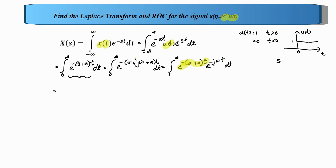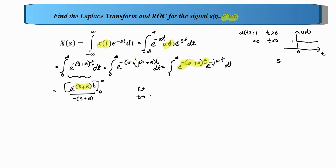We can integrate to get e raised to minus s plus a into t, divided by minus s plus a, with the limit from 0 to infinity. The term 1 divided by minus s plus a can be taken outside since t is the variable. When we apply the limit t tending to infinity, we consider the term e raised to minus s plus a into t, and examine two cases depending on whether s plus a is positive or negative.